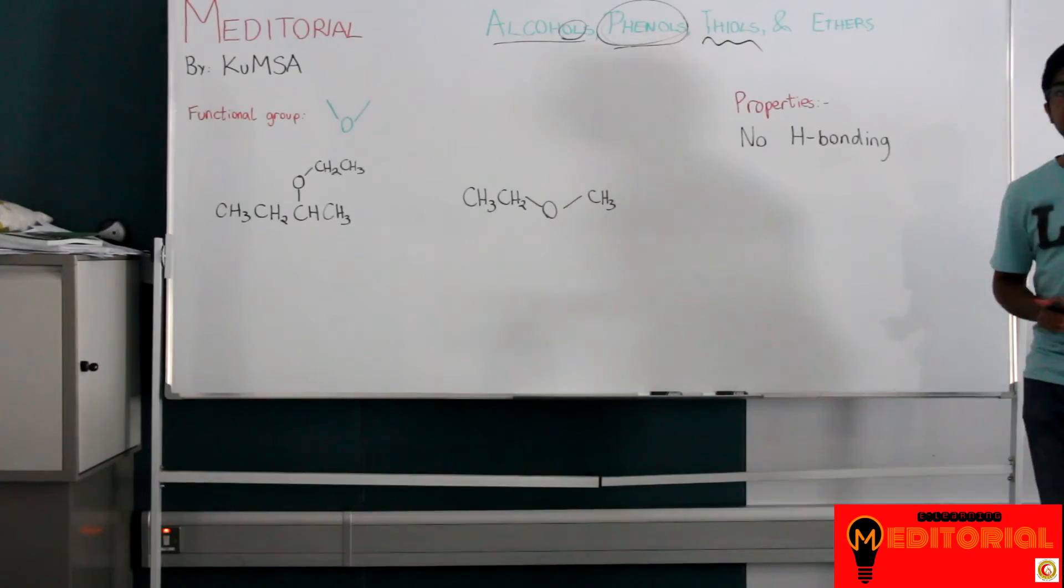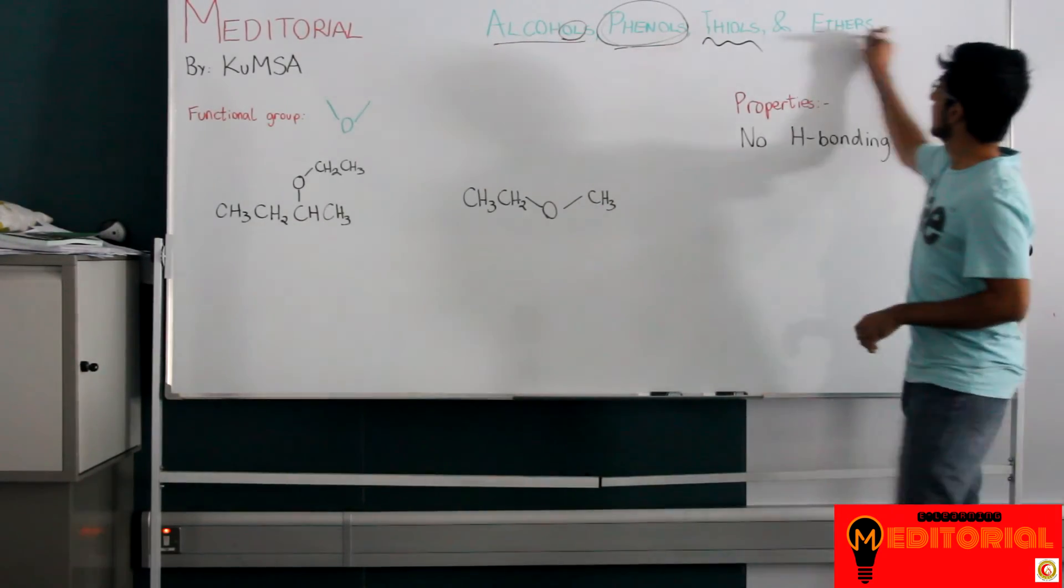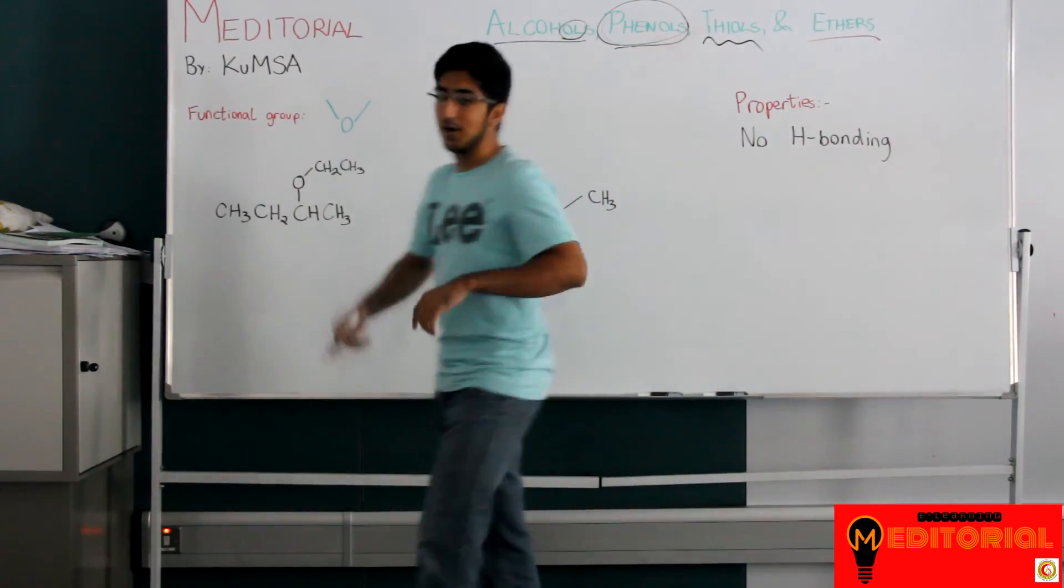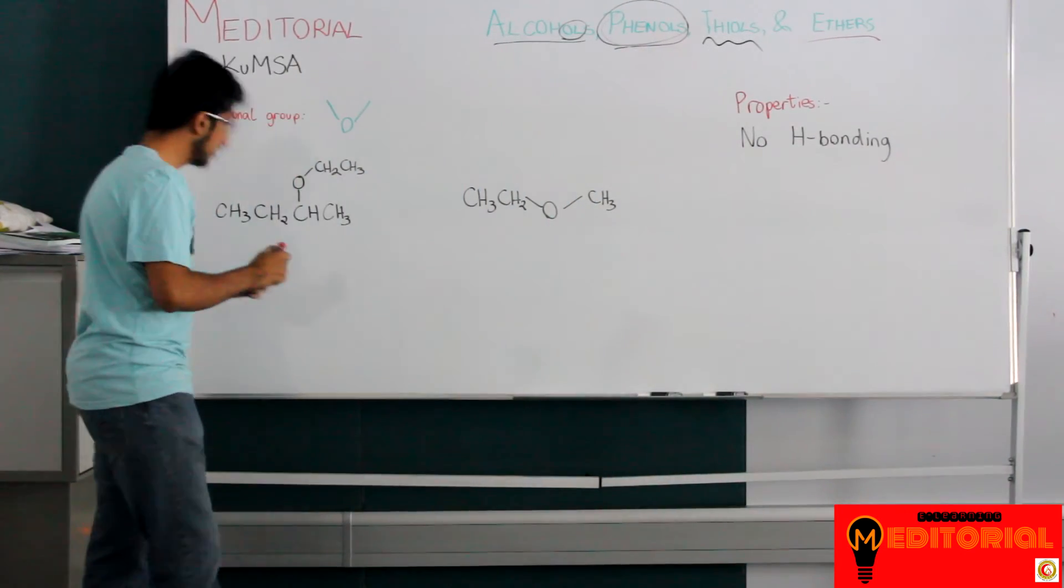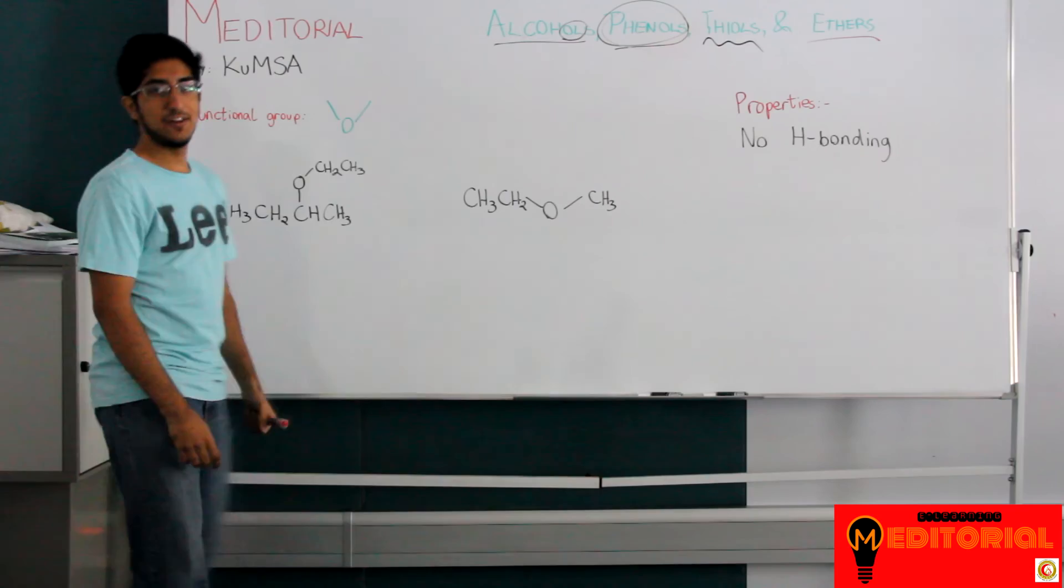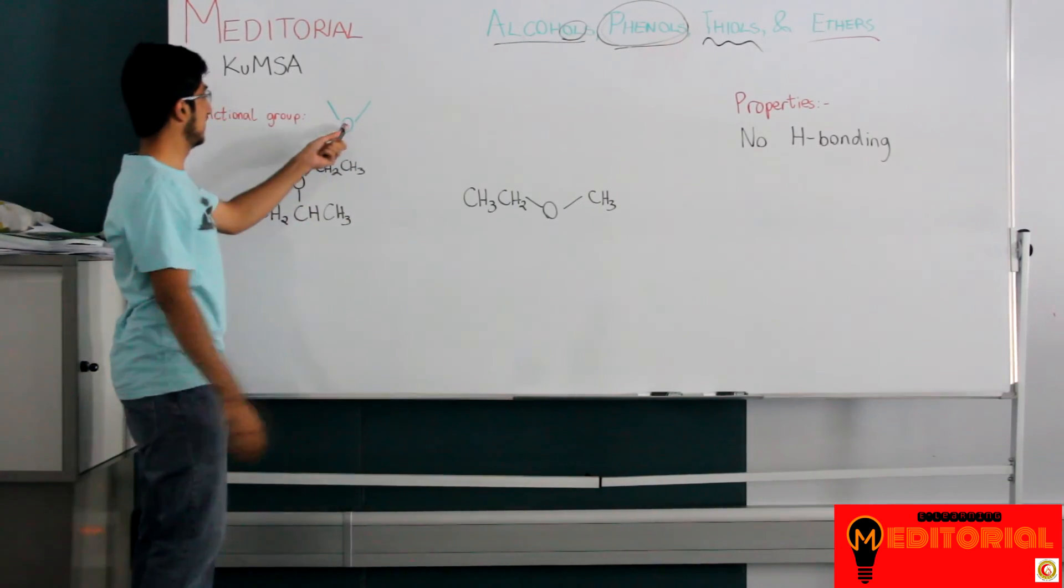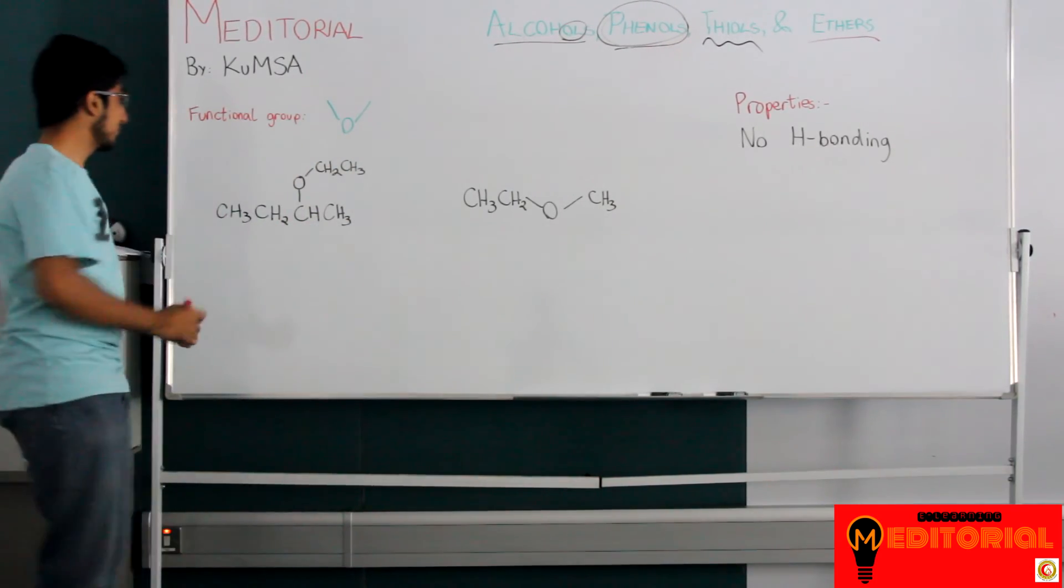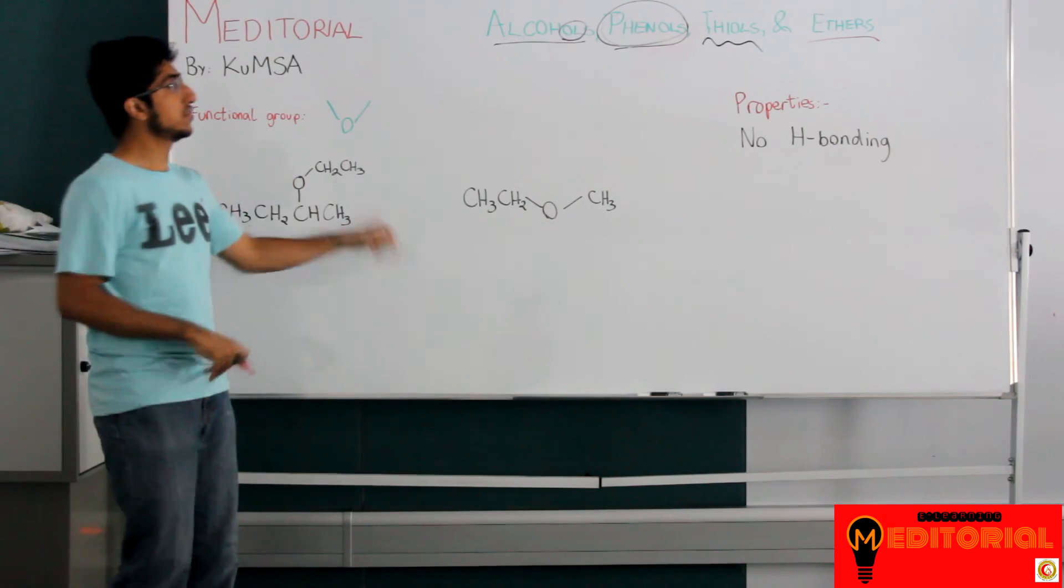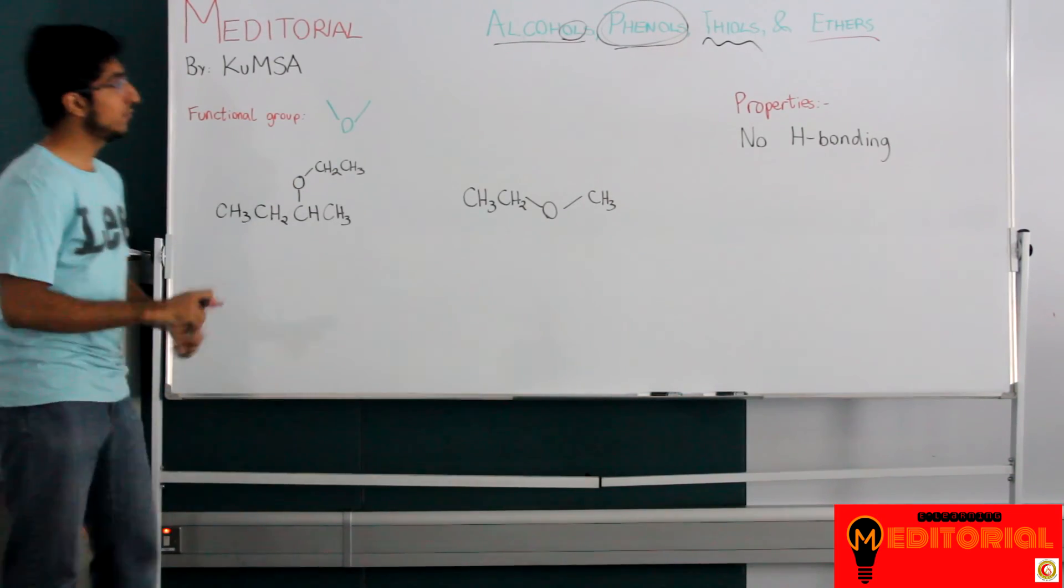Now ethers. So ethers are one of my favorite things because their functional group looks like that. It looks like someone's doing it like this. You know, it's an oxygen with two bonds sticking out. I've drawn two molecules here. We're going to try and name them and then we're going to move on to the properties.